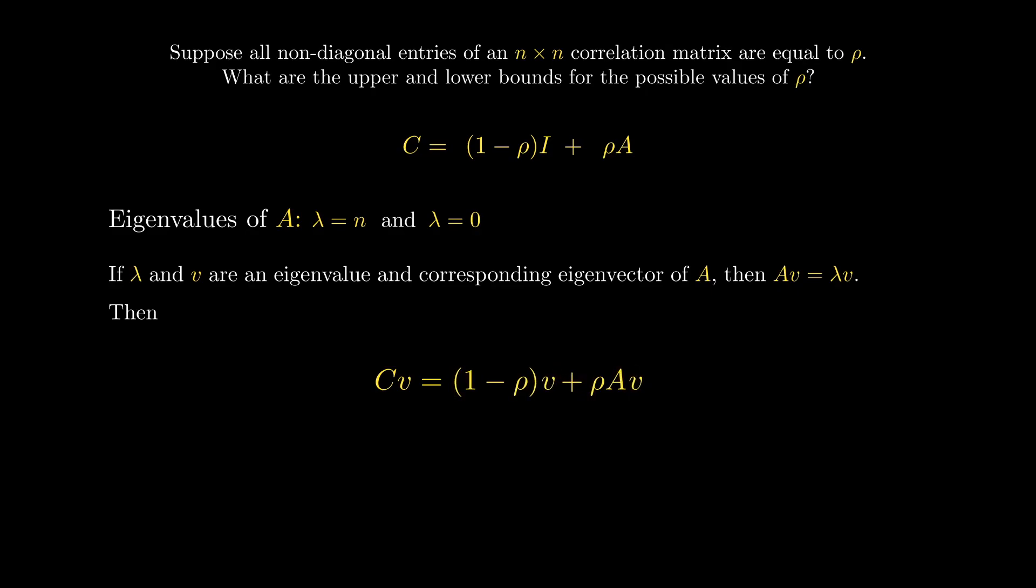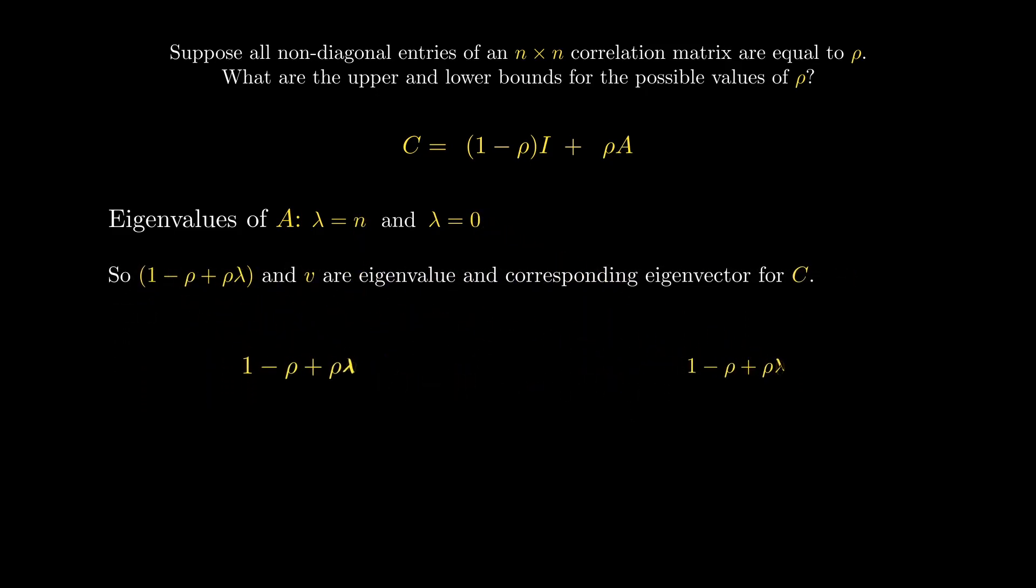Distributing the V inside the brackets, we can see that we're multiplying A and V on the right-hand side, which is equivalent to lambda times V. Factoring out the V again gives us 1 minus rho plus rho times lambda multiplied by V. So, 1 minus rho plus rho times lambda and V are eigenvalue and eigenvector pairs for C. Plugging in n and 0 for lambda, we get two eigenvalues for C, specifically 1 plus n minus 1 times rho and 1 minus rho.